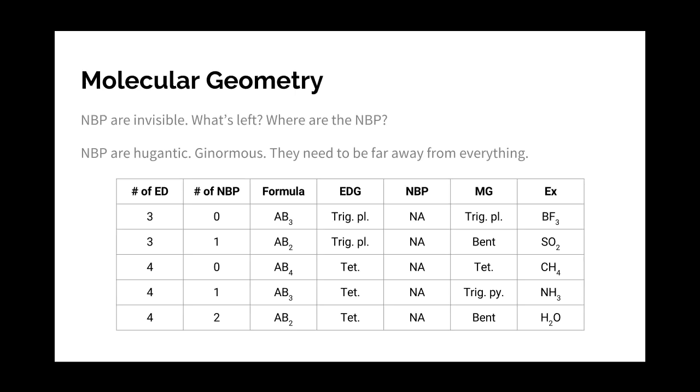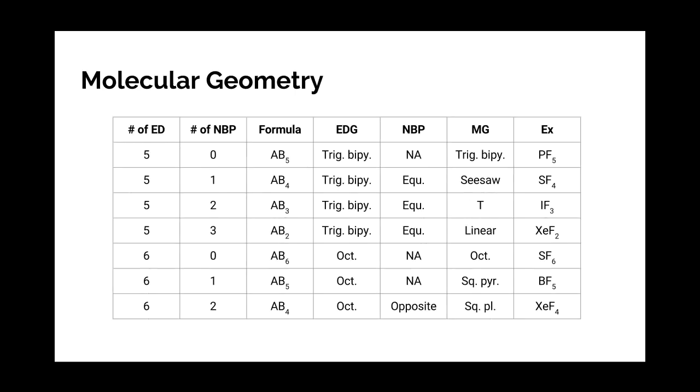Now the other thing to remember is that non-bonding pairs are bigger than bonds. They take up more space, so they sort of squish the other electron domains together. So now we look at the big old chart I've made here. This is only half the chart on this page.